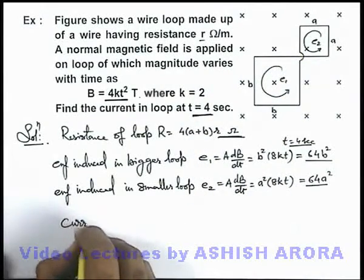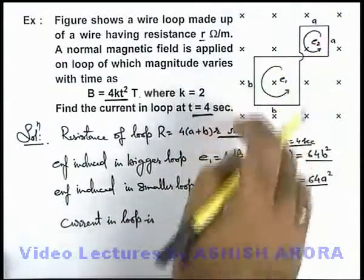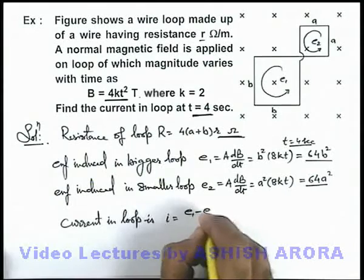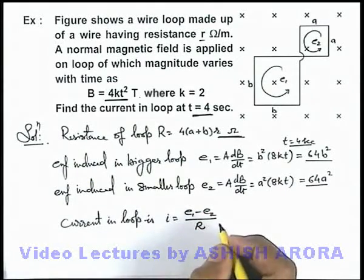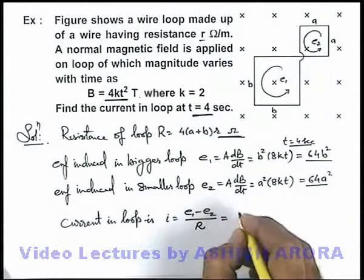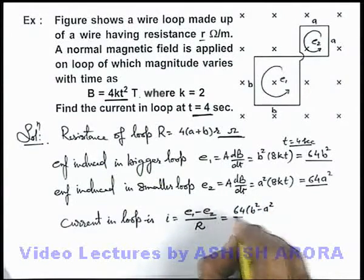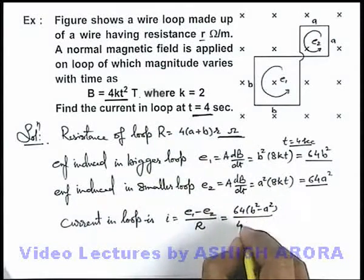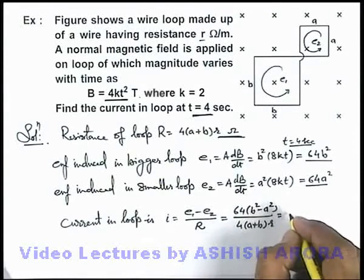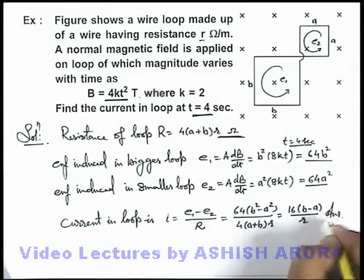So we can directly write current in the loop. This is a combined loop in which both loops are connected to each other. Total current we can write as (e₁ - e₂) divided by total resistance, because the two EMF currents are opposing each other. If we substitute the values, this will be 64(b² - a²) divided by the total resistance which is 4(a + b)r. Further simplifying, the result we are getting is 16(b - a)/r. That will be the answer to this problem.